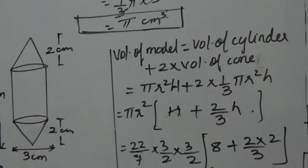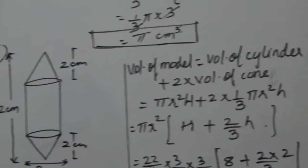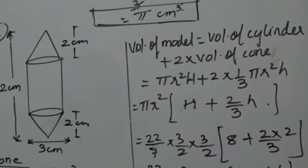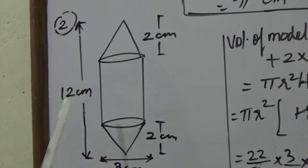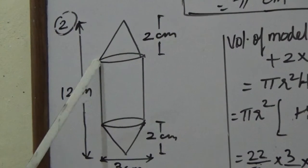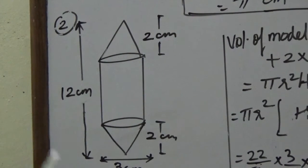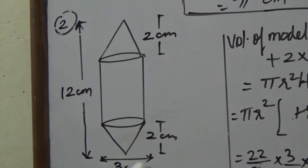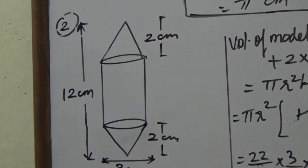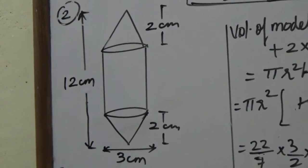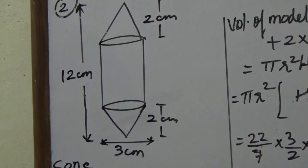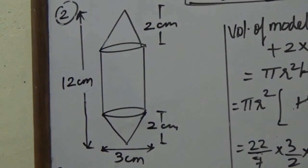In question 2, Rachel, an engineering student, was asked to make a model shaped like a cylinder with two cones attached at two ends using thin aluminum sheet. The diameter of the model is 3 cm and its length is 12 cm. Each cone has a height of 2 cm. We need to find the volume of air contained in the model.